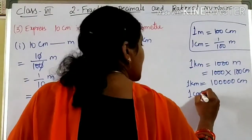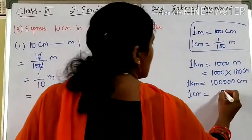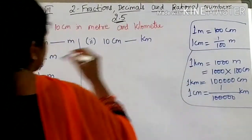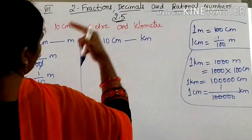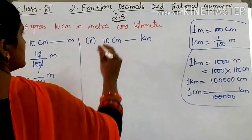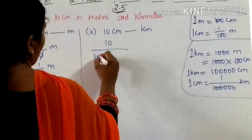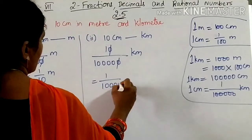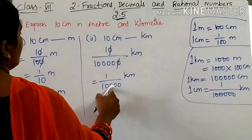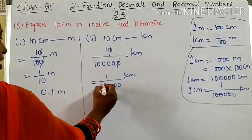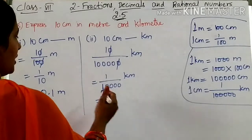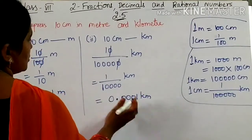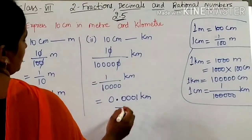I want 1 centimeter equal to how many kilometers? So 1/1 lakh kilometers. Now we apply this: 10 centimeters equals 10/1 lakh kilometers. If you cancel zeros, you get 1/10,000 kilometers. In the denominator, 4 zeros means decimal after 4 numbers. So 10 centimeters is nothing but 0.0001 kilometers.